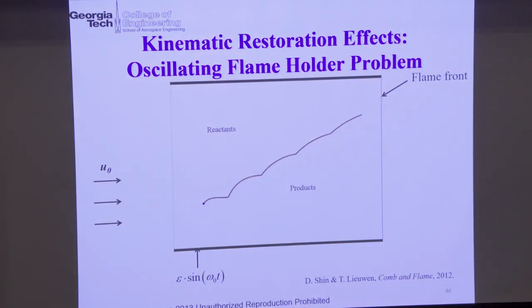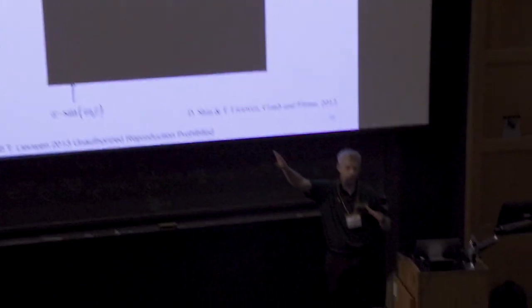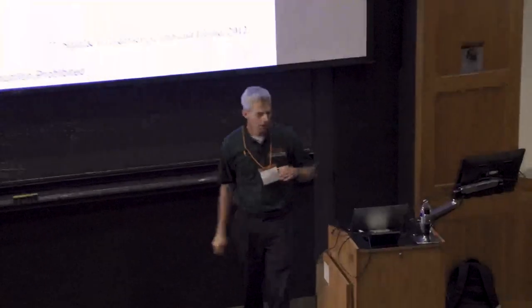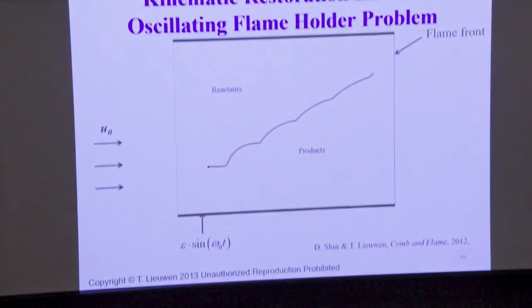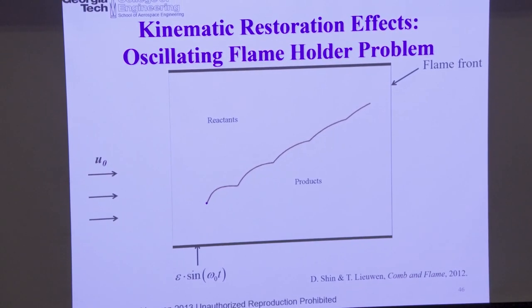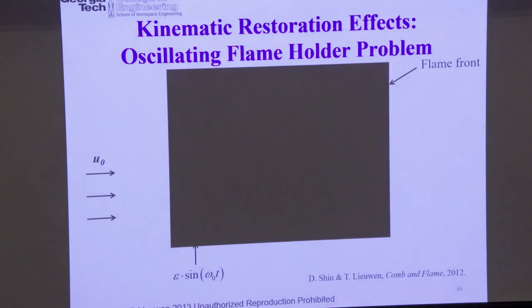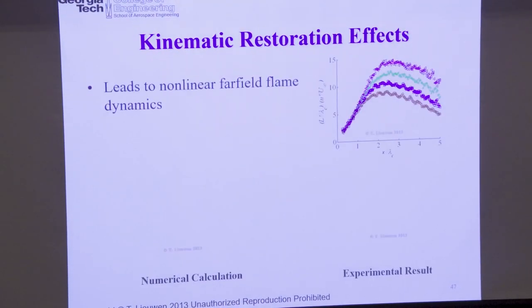Here I have an oscillatory flame holder with flow going left to right. If you linearize this equation, the magnitude of flame wrinkling stays constant with downstream distance. But if you include these nonlinear effects, here's a calculation — you can see those wrinkles getting smoothed out as you move downstream. So just another example.